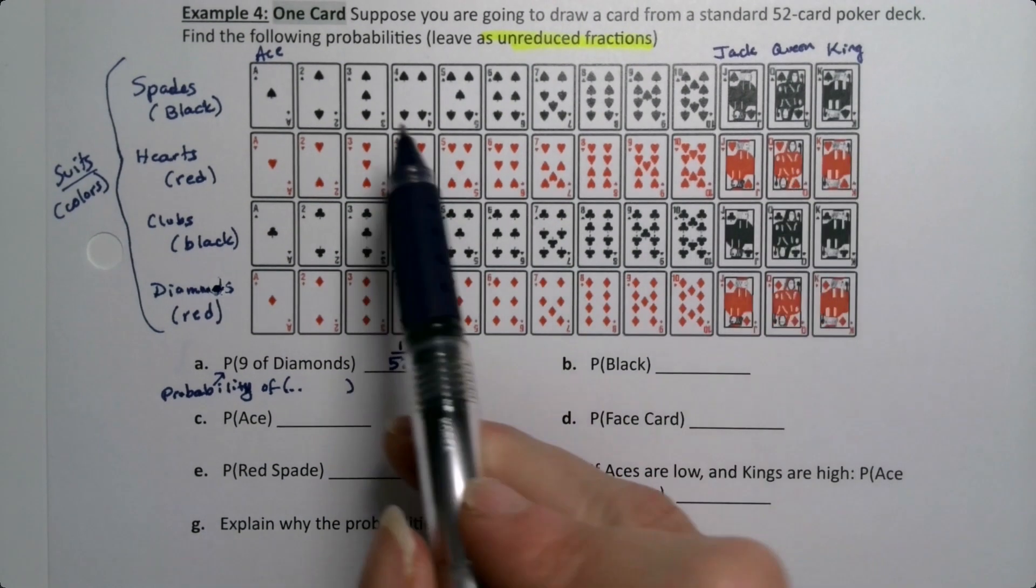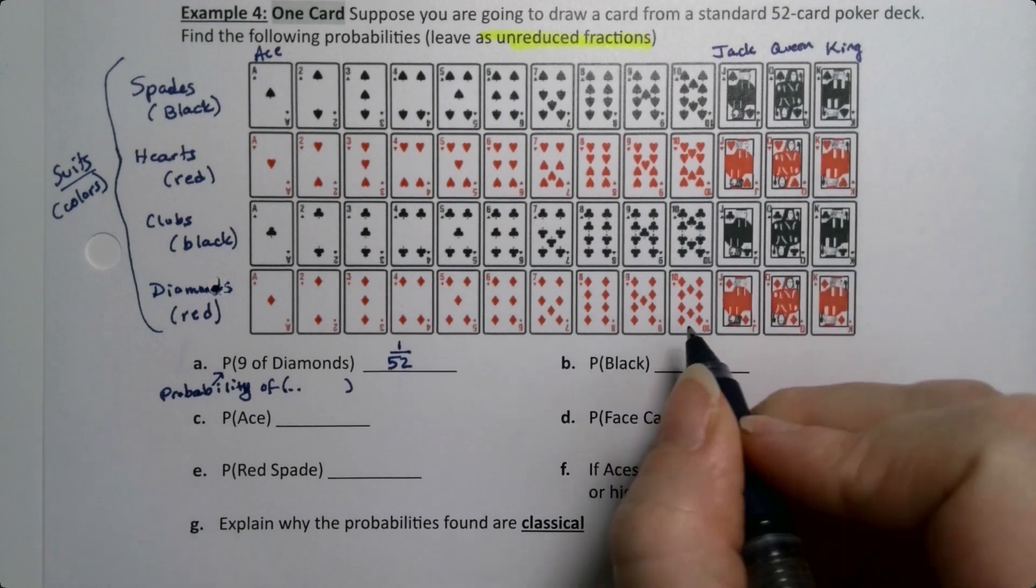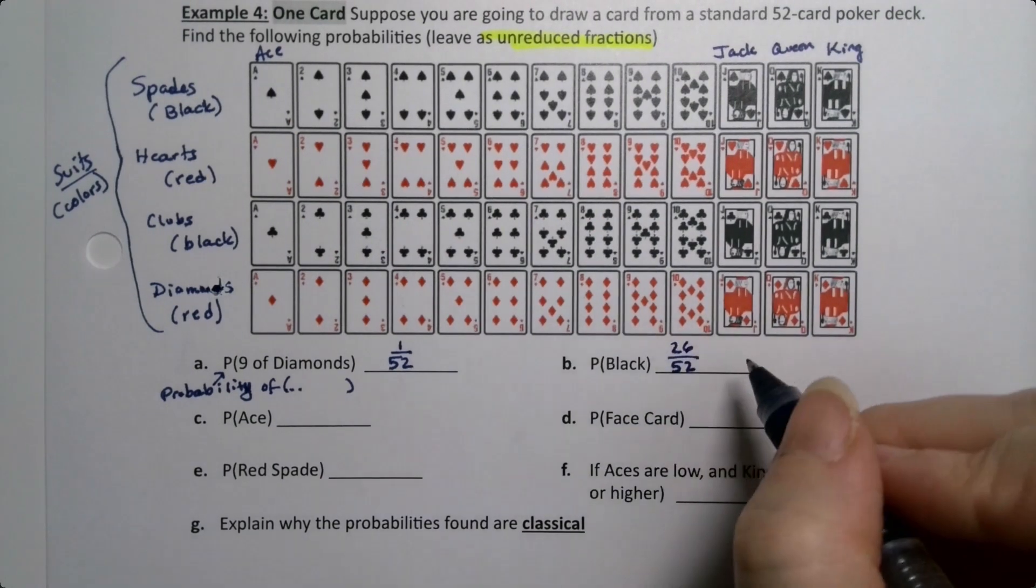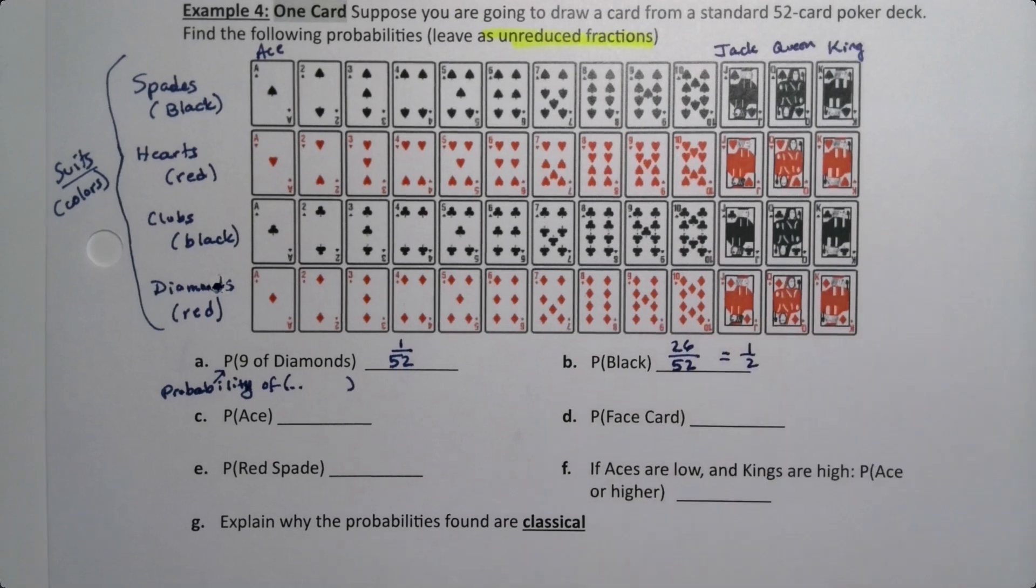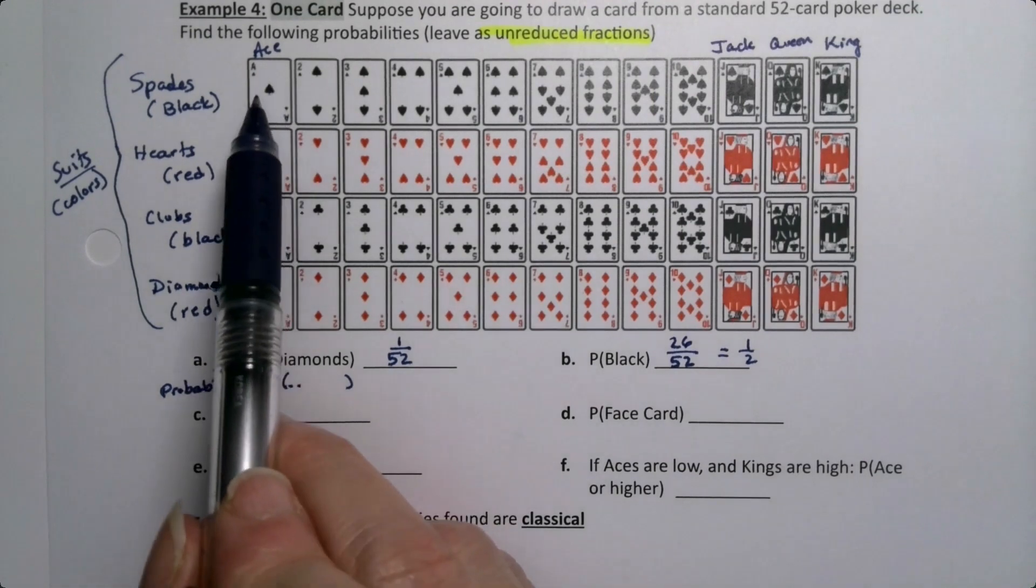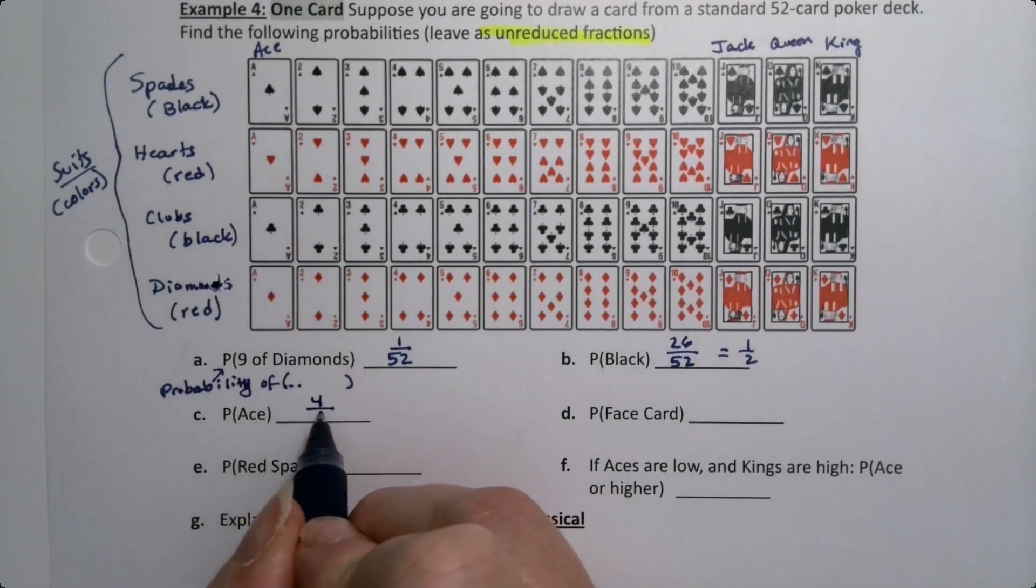Now, what about a black card? Well, there's 13 plus 13 more, which is 26. So 26 out of 52. Or some people just know that's a half. Half the deck is black. Now, aces. There's four aces, so the probability of an ace is 4 over 52.